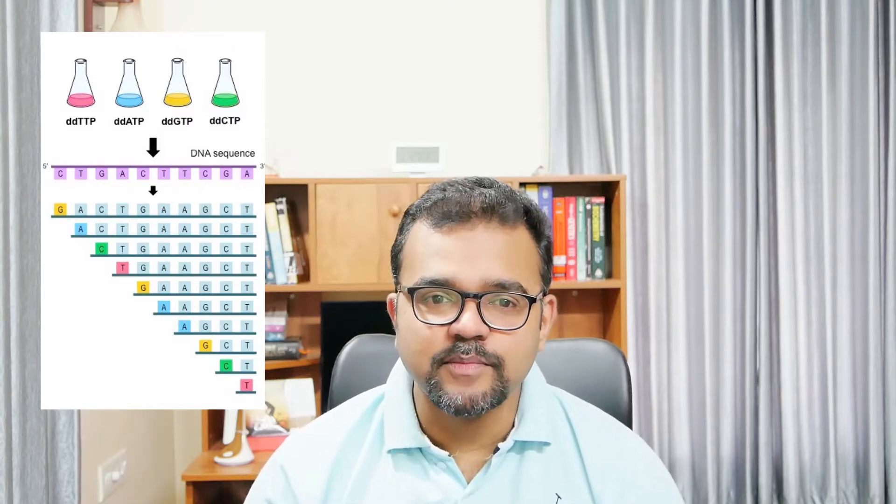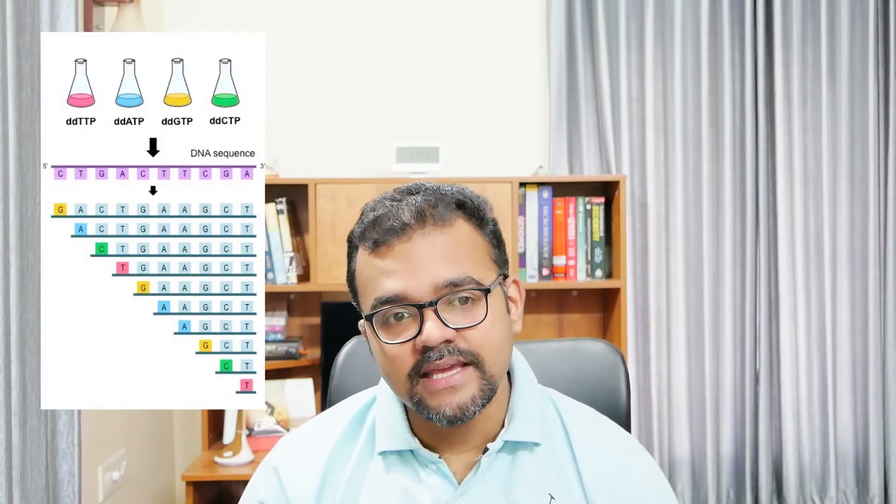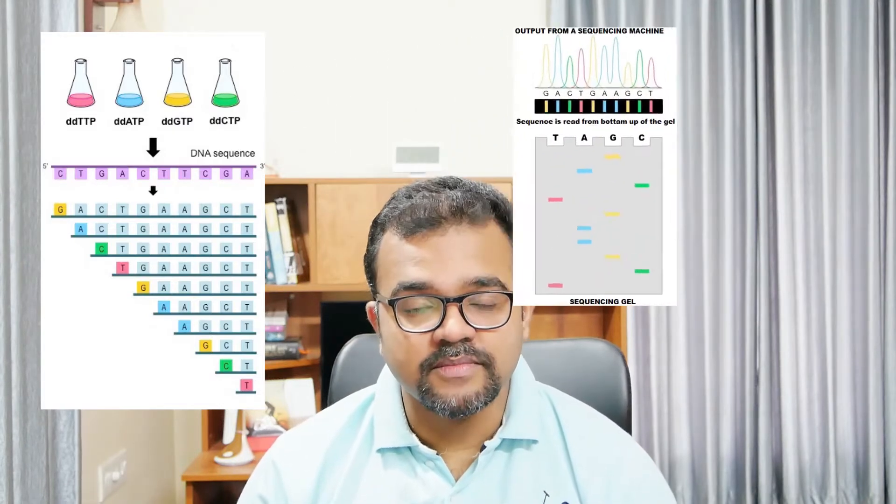In this method, the terminator DDNTPs are mixed with the corresponding deoxynucleotide in a proportion that allows the terminator to be incorporated randomly in at least one of each of the sites for the particular nucleotide. Upon completion of the reaction, each reaction mixture contains DNA fragments of different lengths that represent the DNA template being sequenced, starting from an identical radiolabelled length and ending at each base where the reaction is stopped preferentially using the DDNTPs.